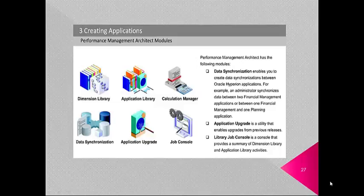Performance Management Architect also includes Data Synchronization, Application Upgrade and Job Console. Data Synchronization enables you to create data synchronization between Oracle and Hyperion applications — for example, synchronizing data between two Financial Management applications or between a Financial Management and a Planning application. Application Upgrade enables upgrades from previous releases. Job Console provides a summary of dimension library or application library activities.